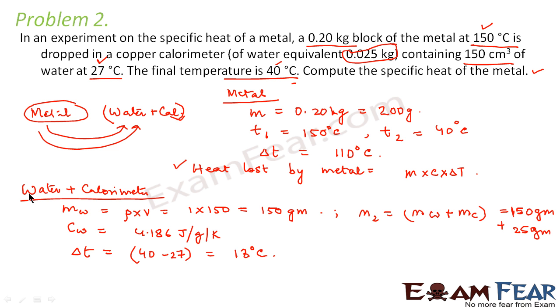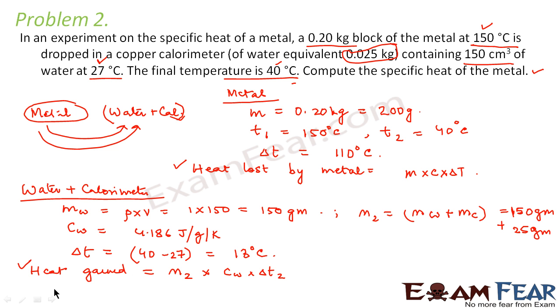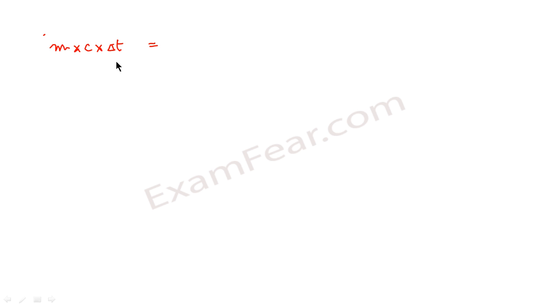The heat lost by the metal equals the heat gained by the water plus calorimeter system. The heat gained by the water-calorimeter system is m2 into c_w into delta T. Now we equate both: heat lost by the metal, m into c into delta T, equals the heat gained by the second system, m2 into c_w into delta T2.